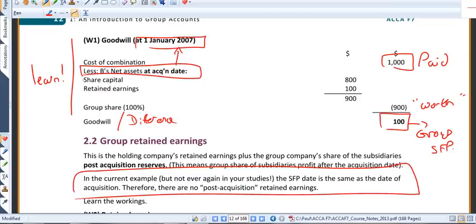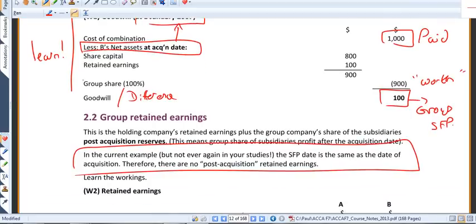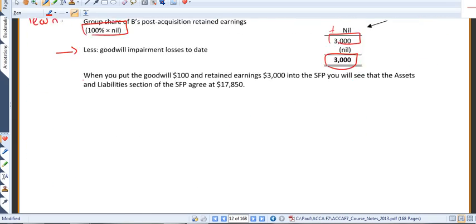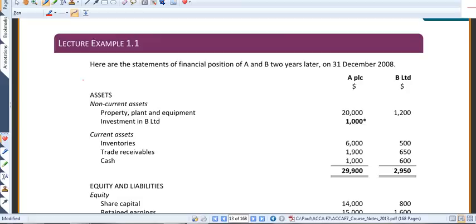But you can think of goodwill really as reputation. You're having to buy the reputation of that business. OK, so we've introduced the concept of groups. Do make sure you're happy with what we've done there. And when you are, let's have a look at the next lecture, which we'll look at in the next video lecture, example 1.1.